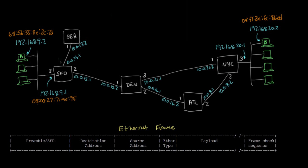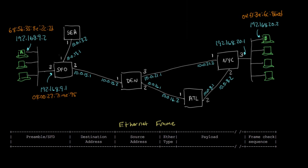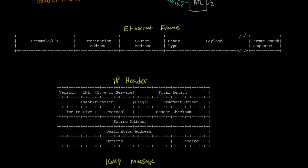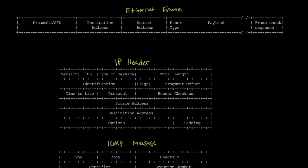I want to finish up our discussion of end-to-end packet forwarding through this network by focusing a little bit more on what the routers themselves are doing. But before we start with that, I want to take a closer look at what is inside an IP packet.